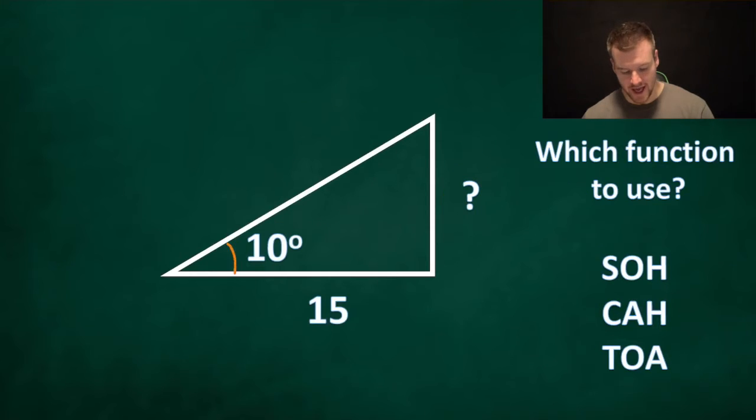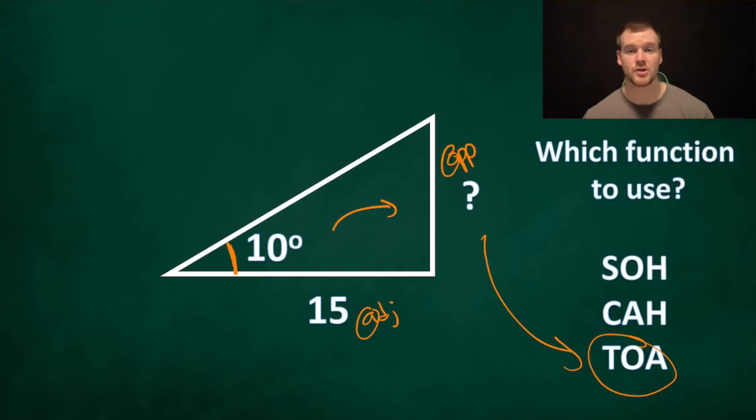This next one, it gives us the angle right here. It's asking about the opposite and it gives us information about the adjacent. So I look at A and O and that's going to take me to TOA. So we would have to use tan using this angle to find this question mark right here.